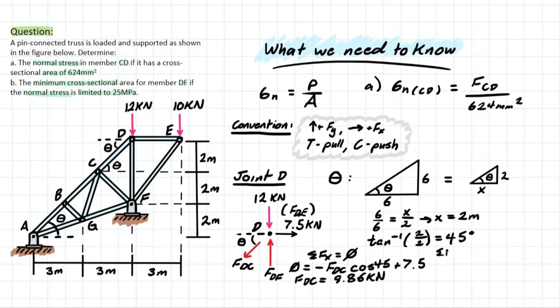And then we can do the same for summation of forces at Y. We're going to have 0 which is equal to negative 12 minus 9.86, which we just solved for, the sine of 45, and we're going to be adding that component FDF, since it's positive in this direction. Looking at FDF and isolating for it, we're going to be left with 18.4 kilonewtons. And now we have the forces of both the members that we need for A and B.